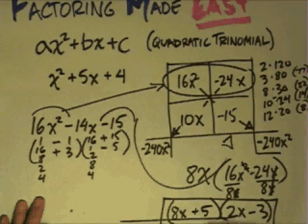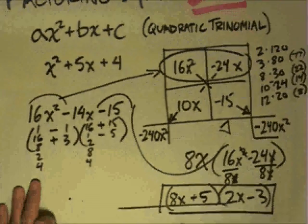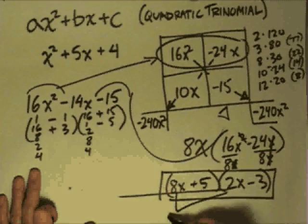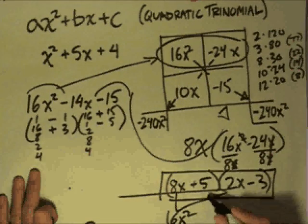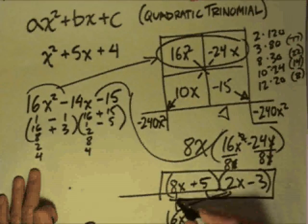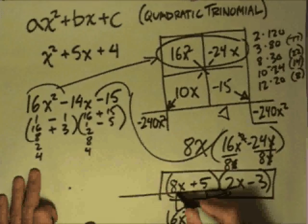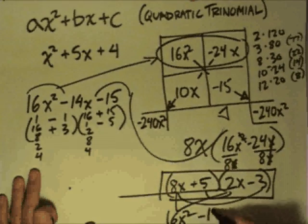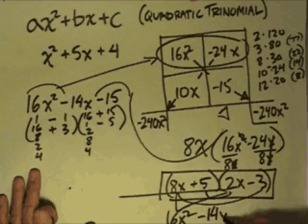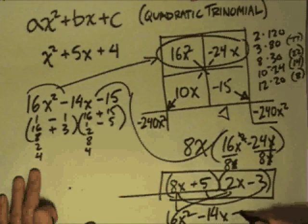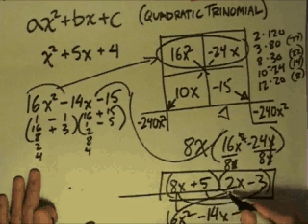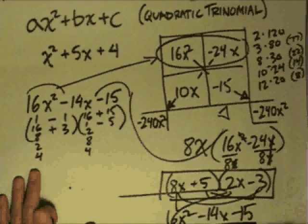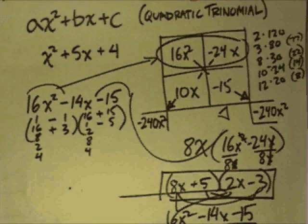You can quickly FOIL and check — you'll see it works out. The first terms give 16x squared, then 10x and negative 24x give minus 14x, and finally the last terms give minus 15. And we're good to go!